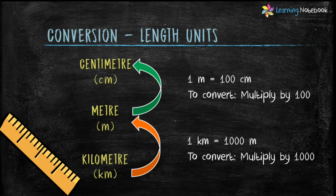One meter equals to one hundred centimeters, so to convert meters into centimeters we multiply by one hundred. For example, 2 meters equals to 2 into 100, which equals to 200 centimeters.